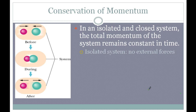An isolated system means that there are no external forces — no forces coming in from the outside. A closed system means no mass enters or leaves, so you have the same mass the whole time within the system and no net external forces on the system.